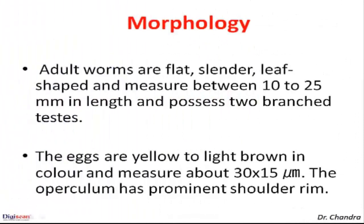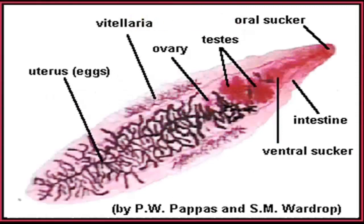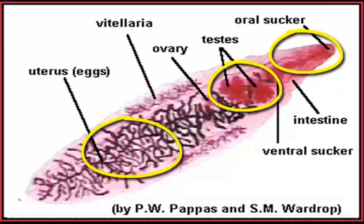Regarding the morphology of the worm: the adult worms are flat, slender, and leaf-shaped, measuring between 10 to 25 mm in length, and possess two branched testes. The eggs are yellow to brown in color, measuring about 30 by 15 micrometers in size, and the operculum has a prominent shoulder rim. Here is a picture of the adult worm showing the anterior end, the testes, and the uterus.